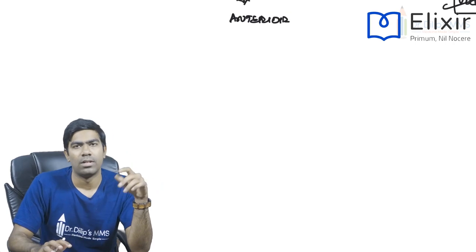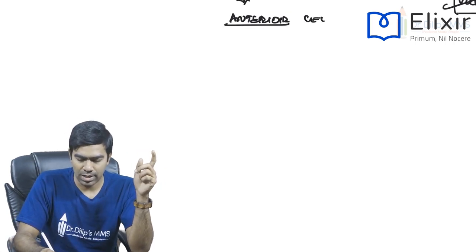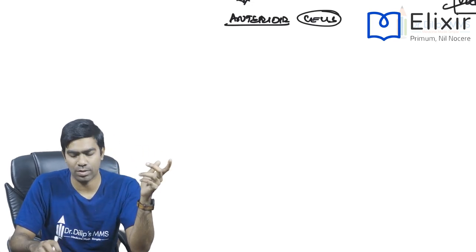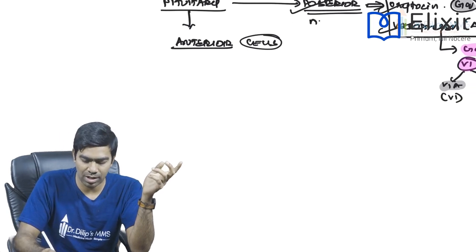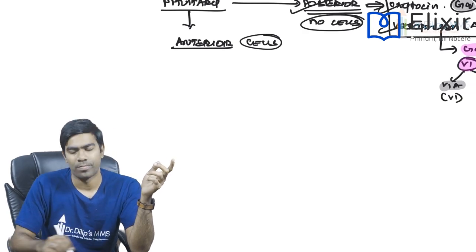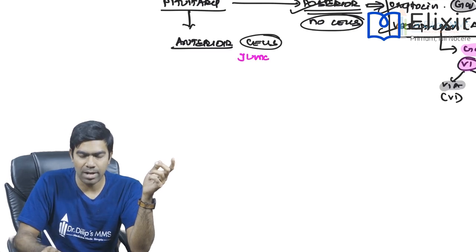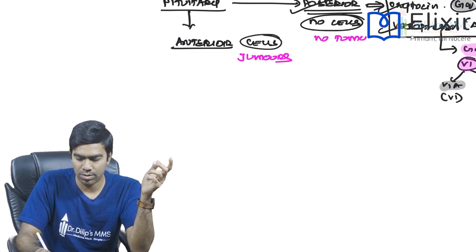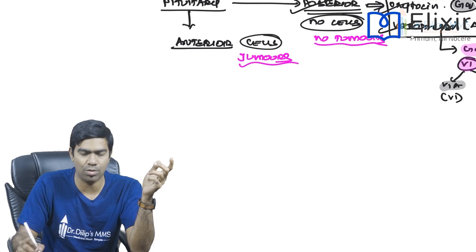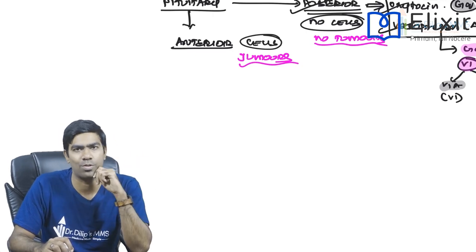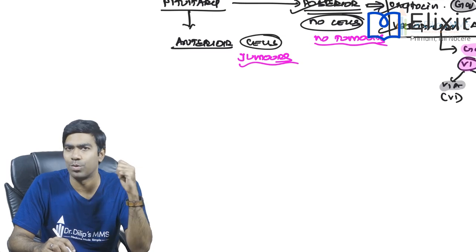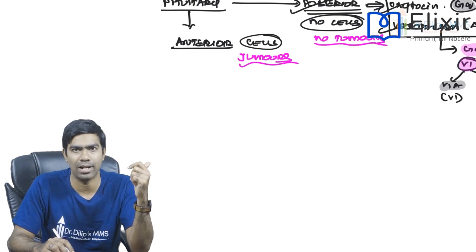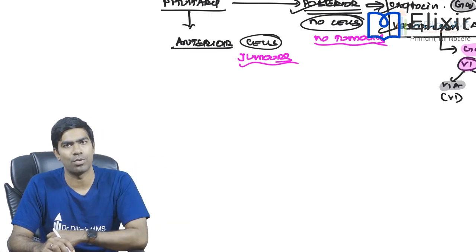In the anterior pituitary, actual secretory cells are present. In the posterior pituitary, there are no secretory cells. This means only the anterior pituitary can produce de novo tumors — the posterior pituitary cannot. Therefore, a pituitary tumor means an anterior pituitary tumor. The posterior pituitary has no functional secretory cells and cannot produce a tumor on its own.